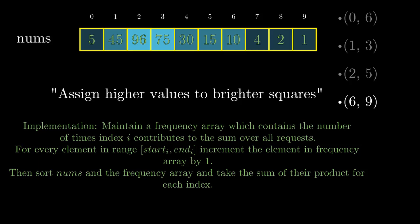Then we'll sort the nums array and the frequency array and take the sum of their product for each index. That will ensure that smaller values are assigned to darker squares and higher values are assigned to brighter squares.